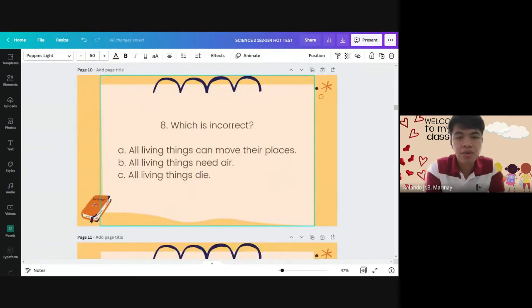Number eight. Which is incorrect? Incorrect means wrong. Which is wrong? A. All living things can move their places. B. All living things need air. C. All living things die.